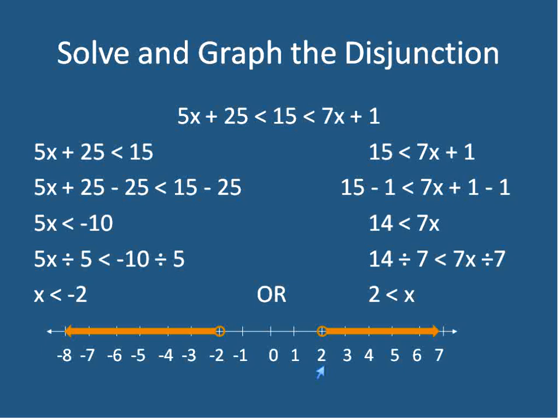The same steps would be used to solve a conjunction. You'll be given a double inequality, and you'll separate it into two sides, solve, and then graph them just like you would normally graph an inequality — except with a conjunction, they'll cross over each other, and you would pick the parts that are a solution for both inequalities.